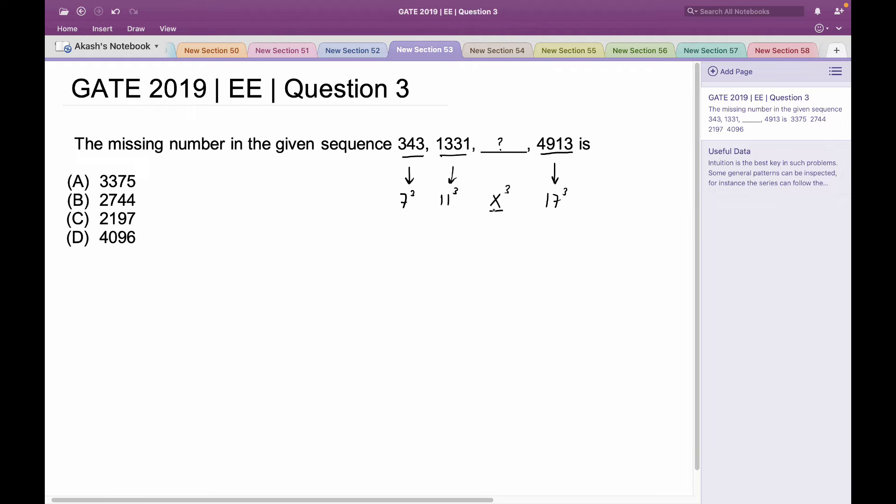Now let's look at the base numbers we have got so far: 7, 11, and 17. Looking at these numbers, I can also observe that these are actually prime numbers.